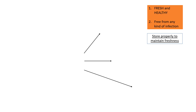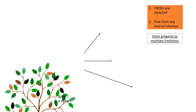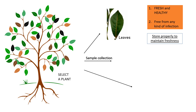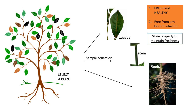First, you need to select a plant. For that, watch the previous video where I discussed the criteria for selecting a plant. Once you have finalized a plant, you need to collect it. You may be interested in working with leaves, stem, or roots — or you can use all three parts for screening for endophytes. It depends on your aim and how you design your experiment.